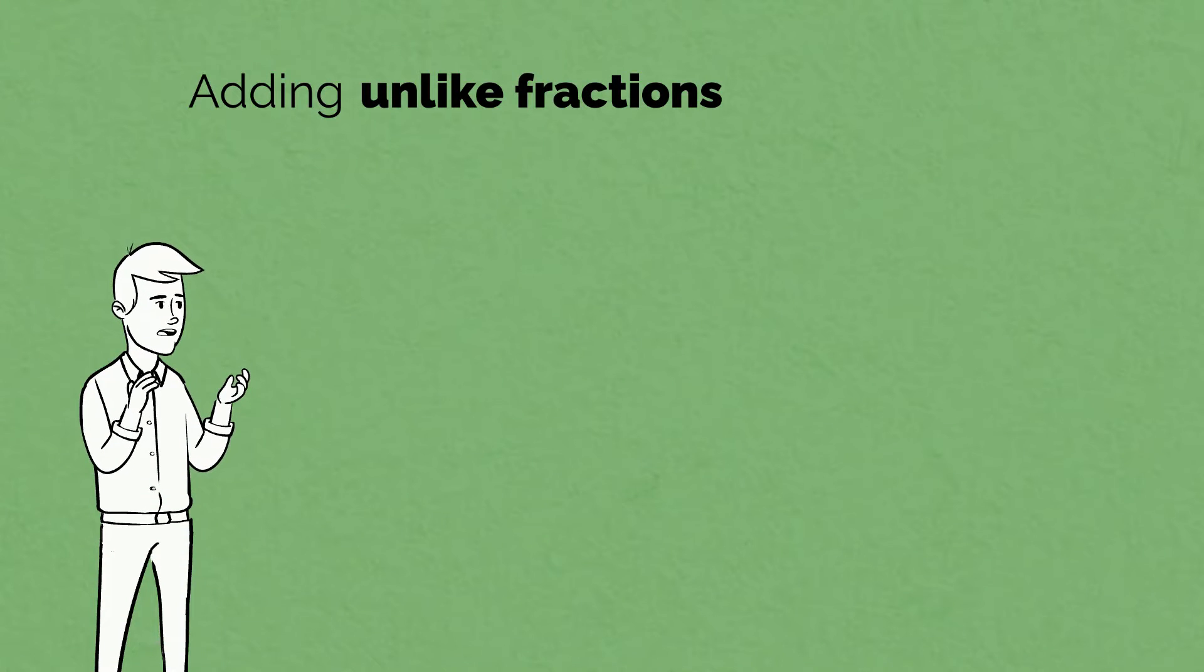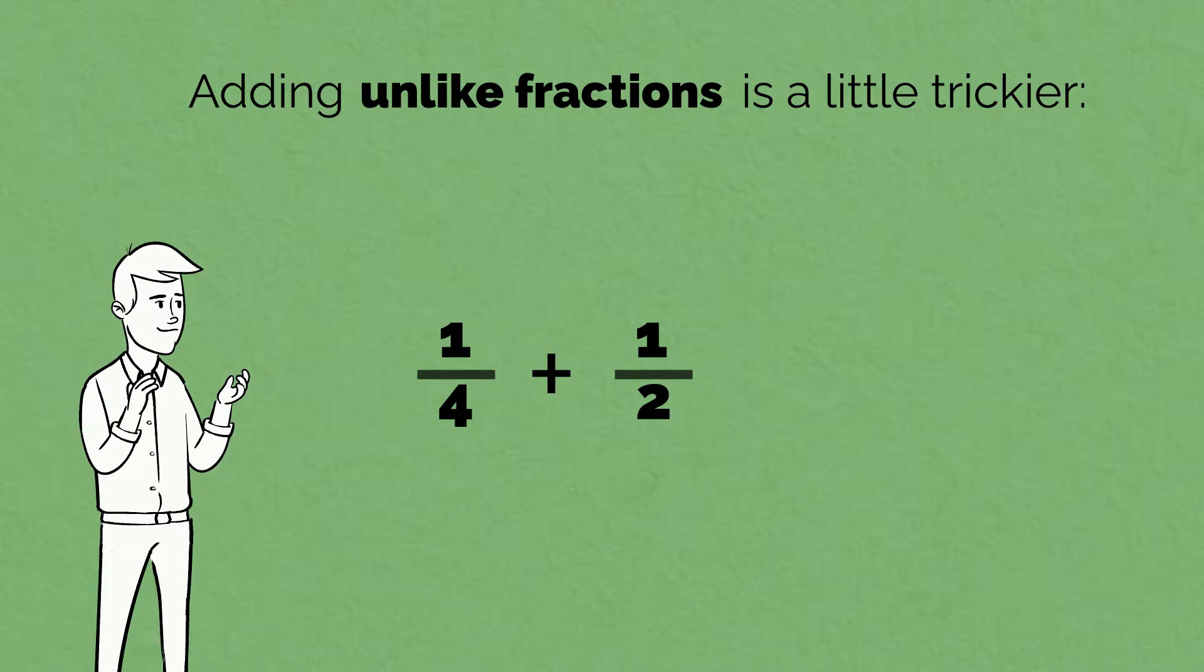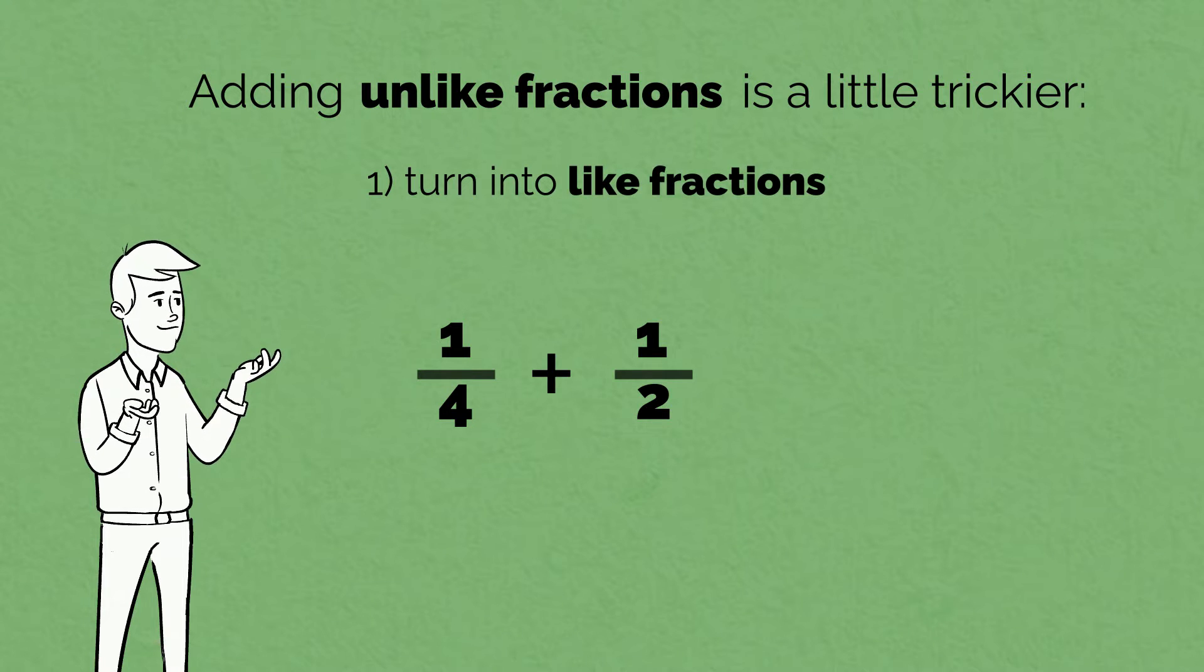Adding unlike fractions, such as 1 quarter plus 1 half, is a little trickier. To add these fractions, we first turn them into like fractions, and then we add the numerators.